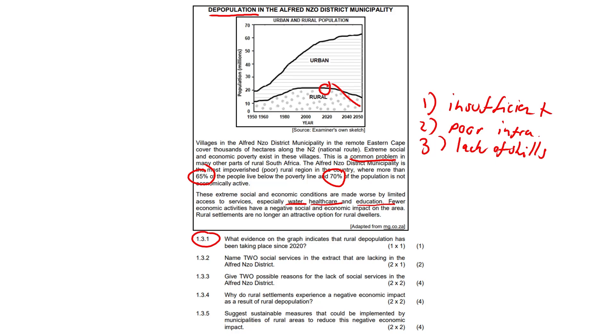1.3.4 Why do rural settlements experience a negative economic impact as a result of rural depopulation? This one is quite important. Firstly, young adults move away. That is your workforce. So young adults move, there's a decrease in the available labor pool.